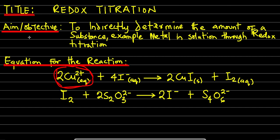Every titration has a reaction equation. For example, if you react acid and base you have HCl and NaOH, which gives NaCl and water. The mole ratio nA and nB is always gotten from the equation of the reaction. So in this case, for this redox reaction, these are the two equations we have.